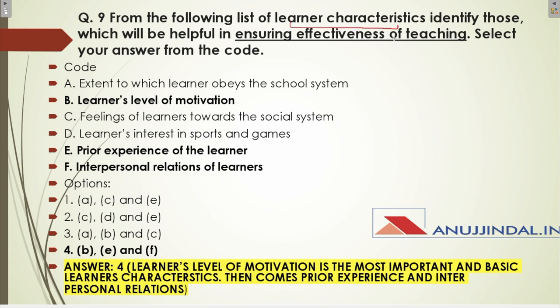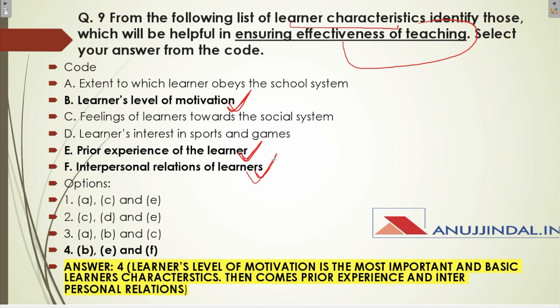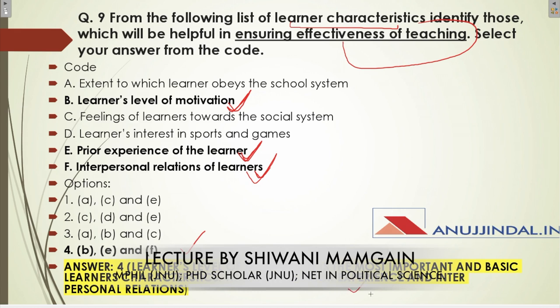Question nine asks: from the given list of learner characteristics, which are necessary to ensure effectiveness of teaching? The most important is the learner's level of motivation. Secondly, prior experience of the learner is very important. Thirdly, interpersonal relations among learners — how they connect with each other. The correct answer is B, E, F.